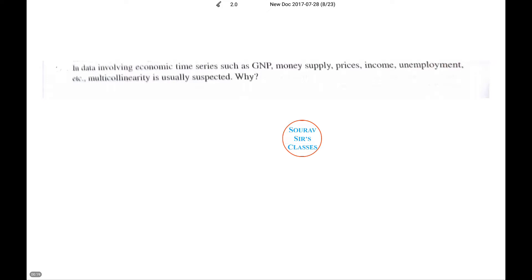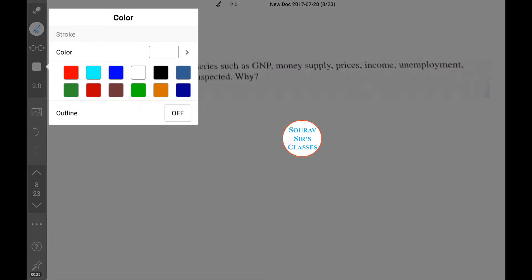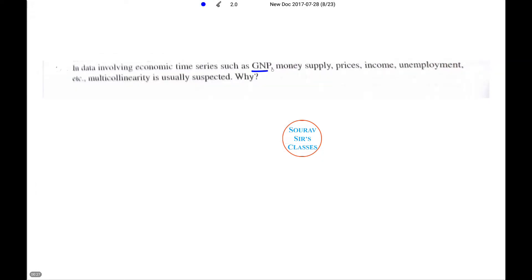The question reads: in data involving economic time series such as GNP, money supply, prices, income, unemployment etc., multicollinearity is usually suspected.